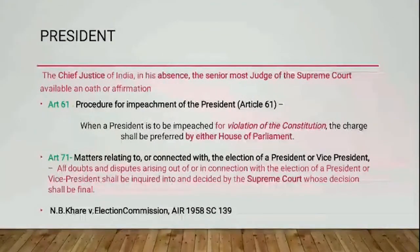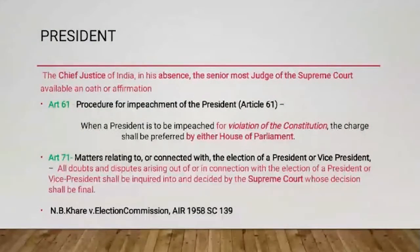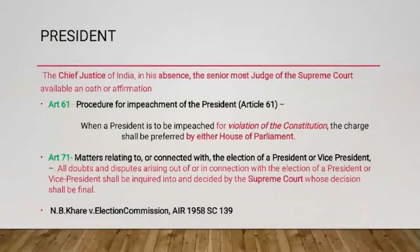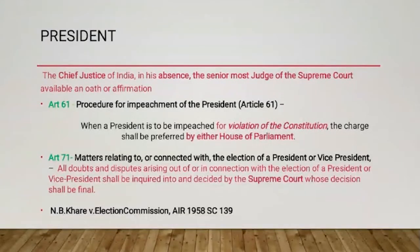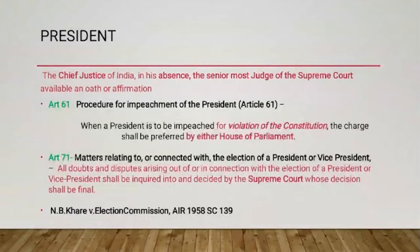Article 61 deals with the procedure for impeachment of a President. When a President is to be impeached for violation of the Constitution, the charge shall be preferred by either House of Parliament. The power to impeach might possibly be invoked in the event of the President acting independently or contrary to the Constitution, or contrary to ministerial advice, or for treason, bribery, or other crimes — that is, wrongful behavior.